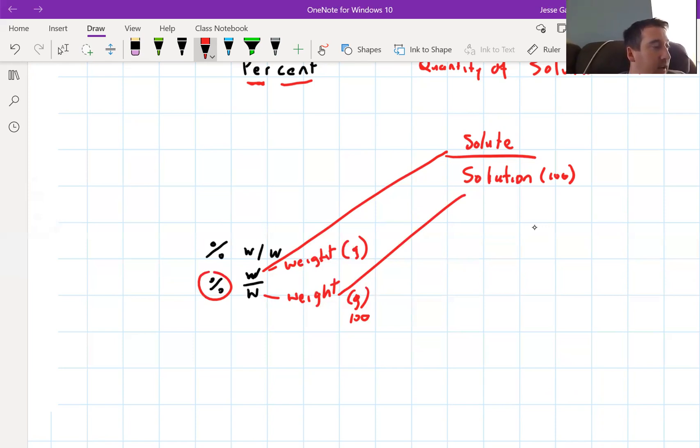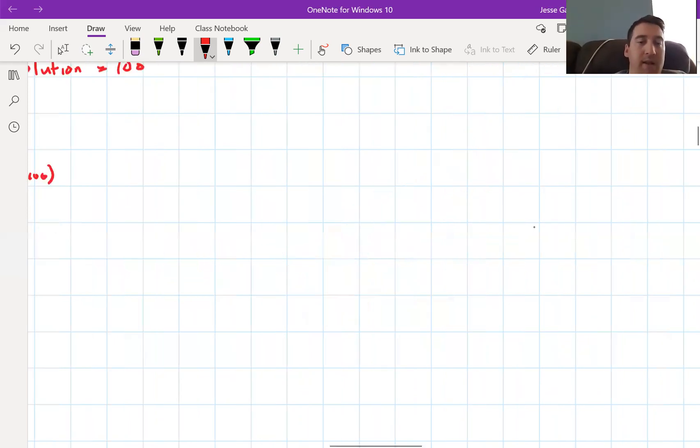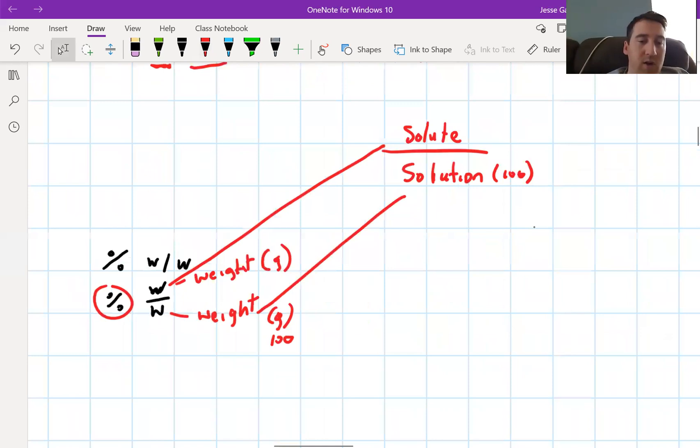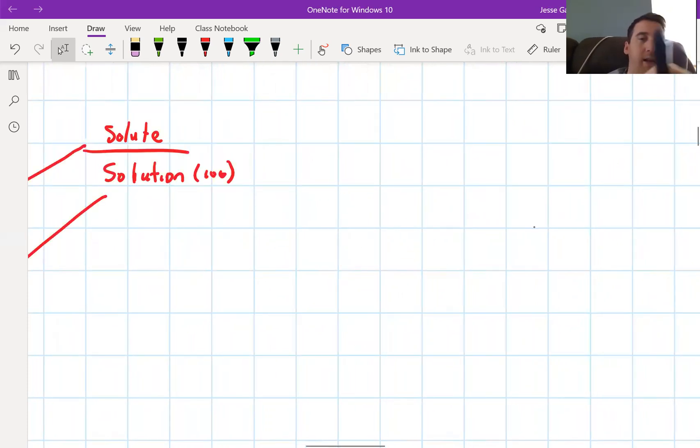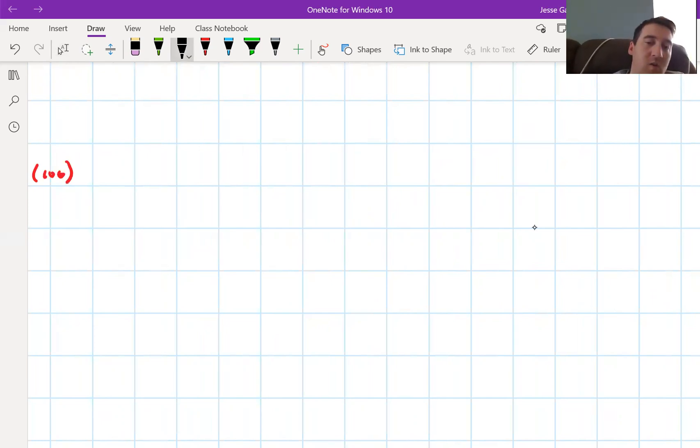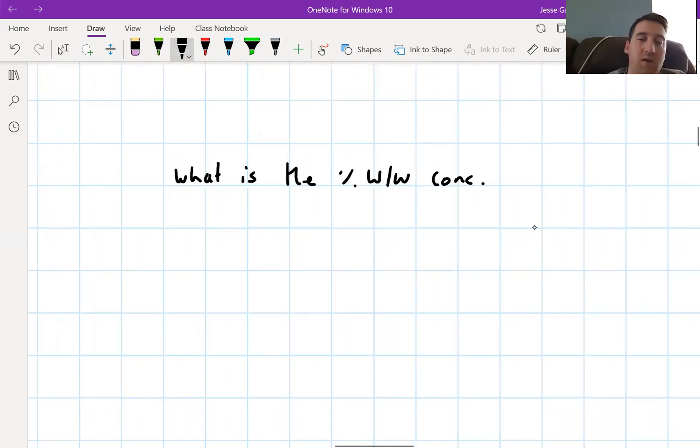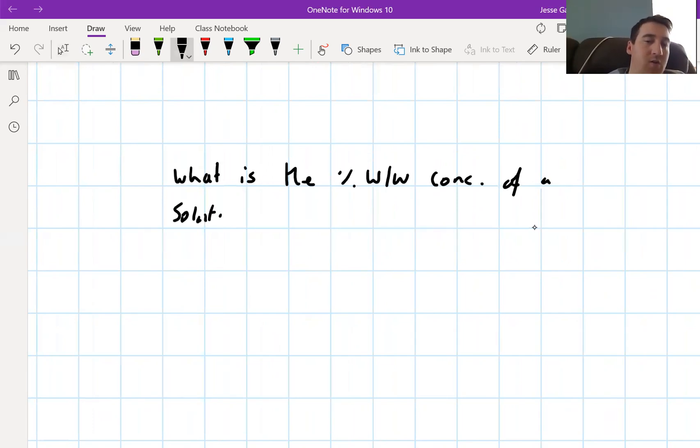Let's take an example. What is the percentage weight per weight concentration of a solution containing 74.3 grams of solute in 250 grams of solution? How do we do this? We simply write down what we know. We know we've got 74.3 grams of solute in 250 grams of solution.